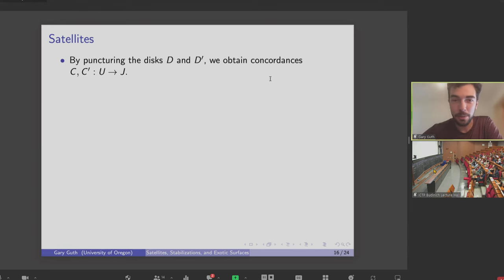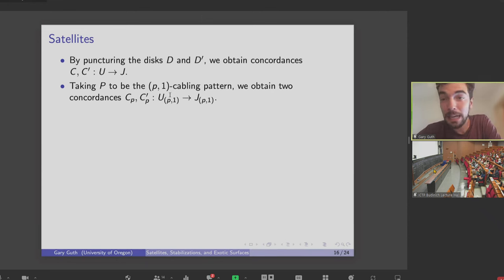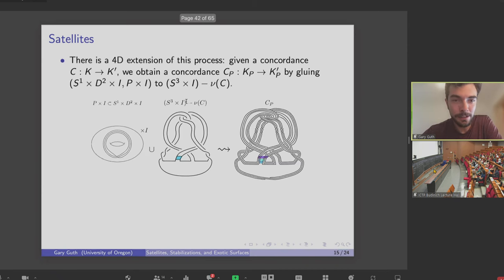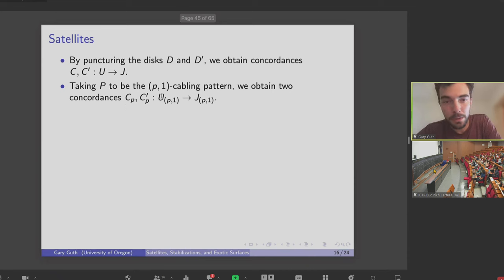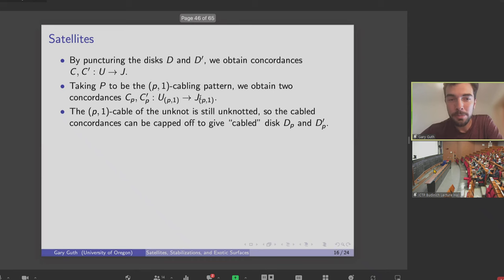So back in our situation here, we had these two disks that both bound this knot J that Kyle Hayden found. If I puncture those two disks, that will give me a pair of concordances, which I'll call C and C prime. If I take this pattern to be this cabling thing, this P1 cable, then I get concordances between the P1 cable of the unknot and the P1 cable of this knot J. But if we go back here, if I wrap around P times in the longitudinal direction and then once, this knot here is actually still the unknot, which means I really have a concordance from the unknot to the cable of J, which means I can just cap off this concordance. And this will actually give me two cable disks, which now bound, which have boundary be the cable of J.